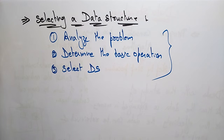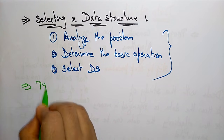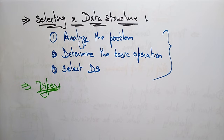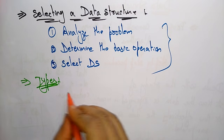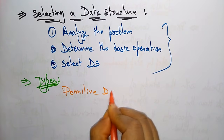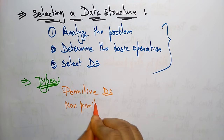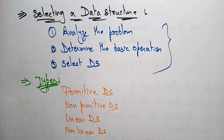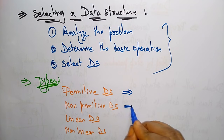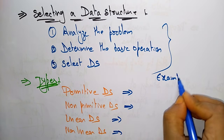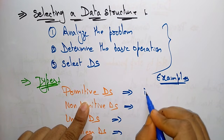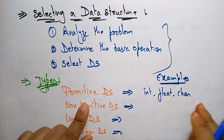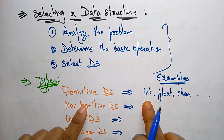Now let's see the different types of data structures. There are primitive data structures, non-primitive data structures, linear data structures, and nonlinear data structures. Primitive data structures are nothing but integer, float, character, and double.